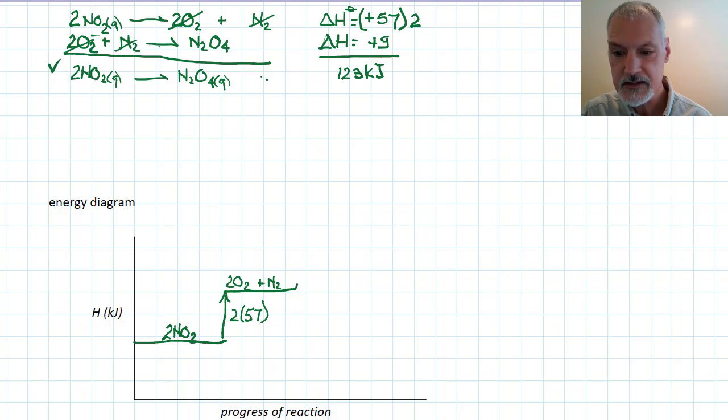Then in the next step, I take that material and convert it into my dinitrogen tetroxide. And that step requires a further 9 kilojoules. So I'm starting here, finishing here. I can get the heat for this reaction now from here up to here, and that's 123 positive kilojoules.